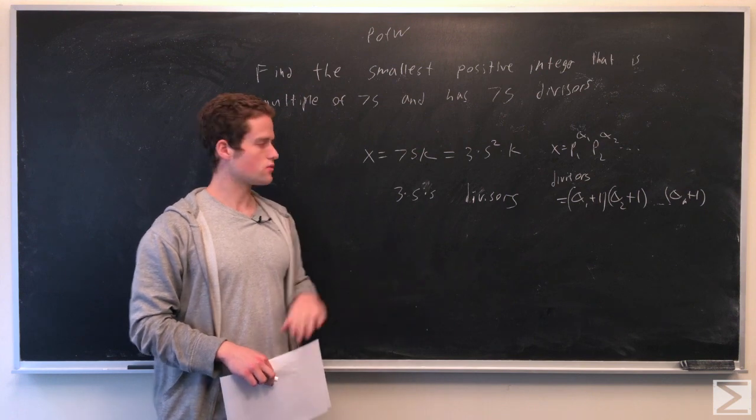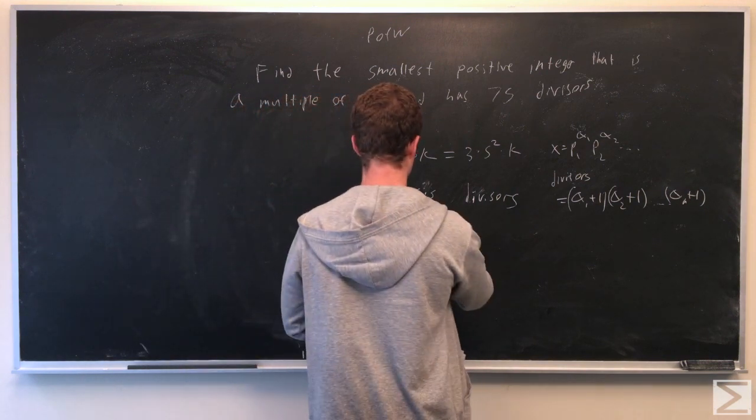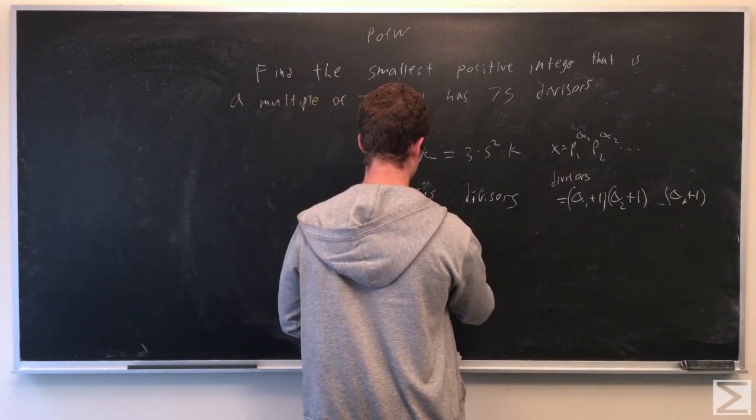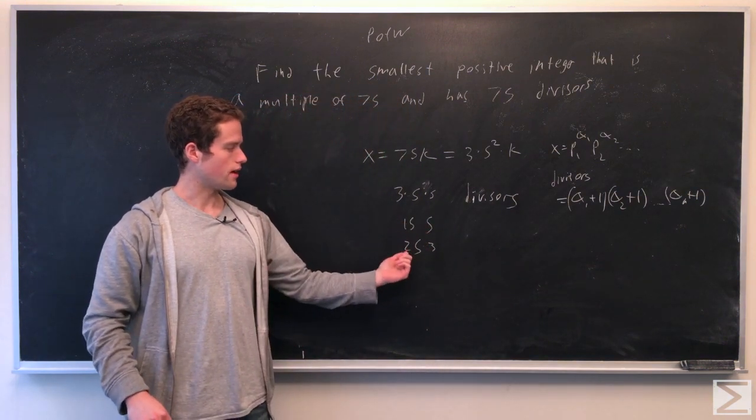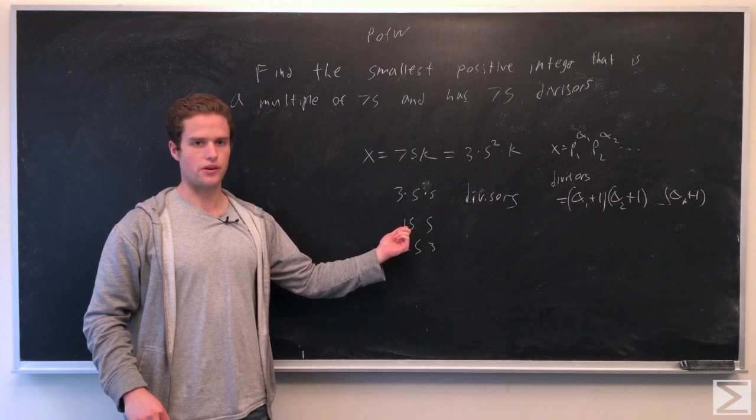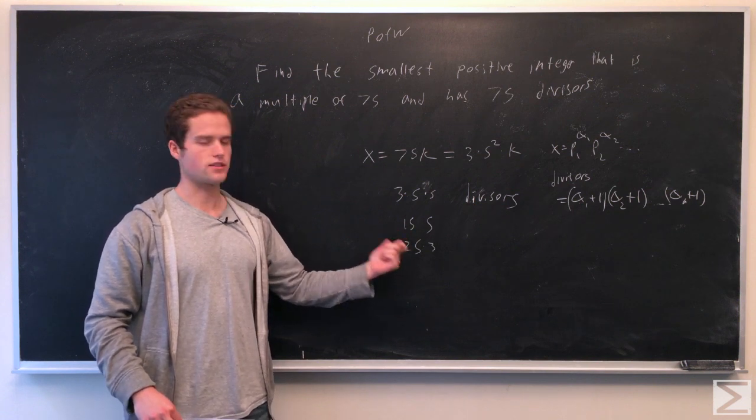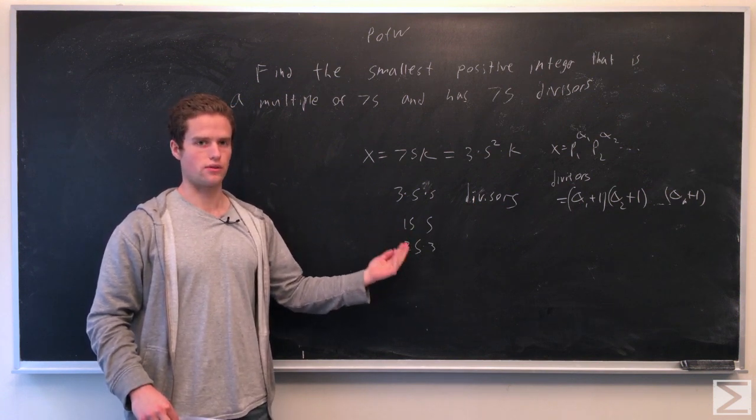Note that if we had two prime factors we'd either form 15×5 or 25×3. These 25 and 15 are big numbers. Powers grow quickly so we're not going to want two prime factors, we're going to want three prime factors. And the third prime is going to be 2 since we want to pick the smallest prime we can.